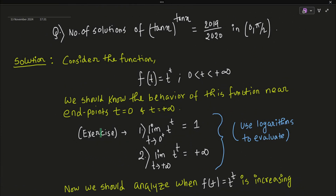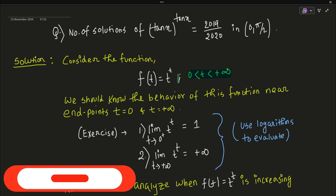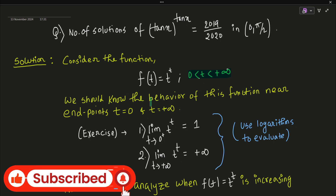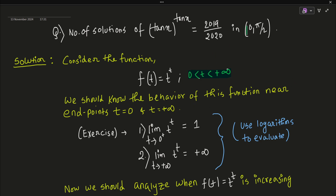For the analytical solution, consider the function f(t) = t^t, defined on (0, ∞). We use t^t instead of tan(x)^tan(x) because we can substitute t = tan(x) later. We need to know the behavior of this function near the endpoints 0 and infinity, and solve t^t = 2019/2020.